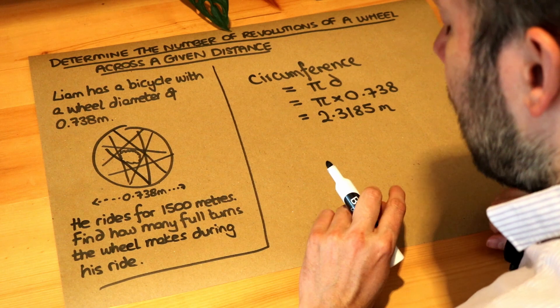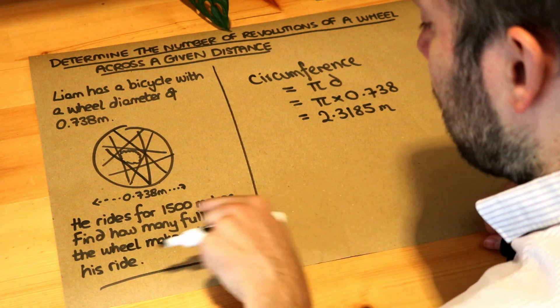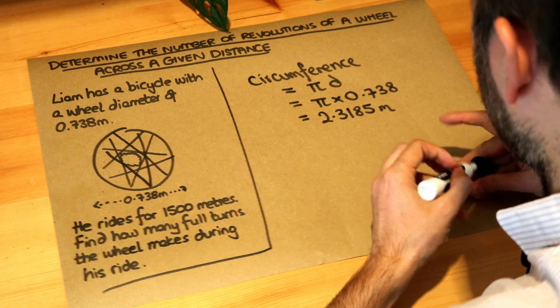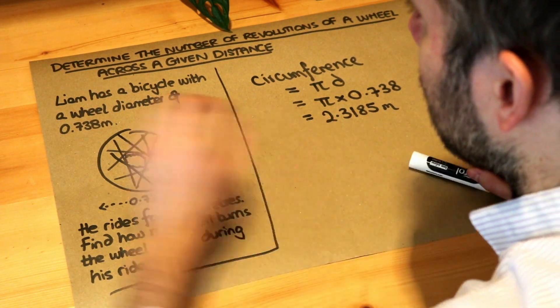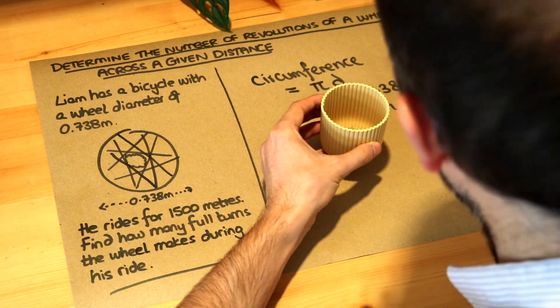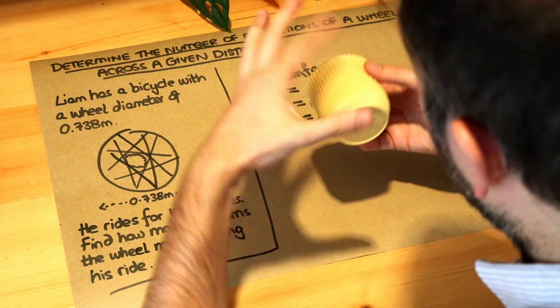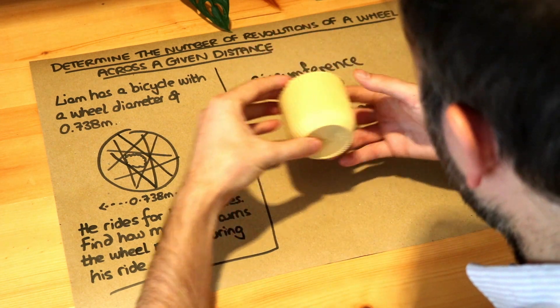So let's think about that in terms of how many times the wheel is going to spin around as we cycle the 1500 meters. Now if I take this plant which has a circular base, this is circular. Imagine that if I make this thinner, this is just a wheel.